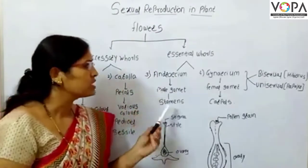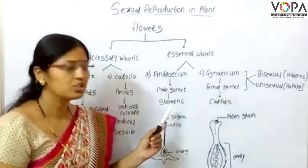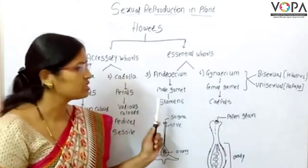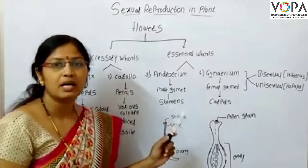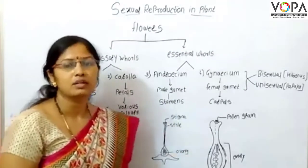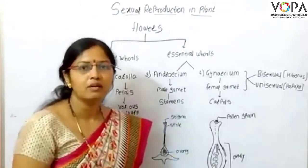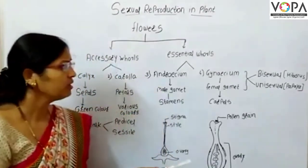Androecium is the male whorl and consists of stamens. Stamens consist of anthers and filaments.